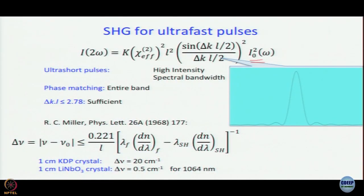So after second harmonic generation, if the spectrum has become narrow just because your Δν is small for the crystal, then automatically in the second harmonic light very few modes are locked. Fewer modes locked means the pulse width would be significantly larger compared to the fundamental. Even 20 cm⁻¹ is not very large, but it is much better than 0.5 cm⁻¹. So you want a crystal for which Δν is going to be as large as possible so that your pulse does not become temporally broadened.